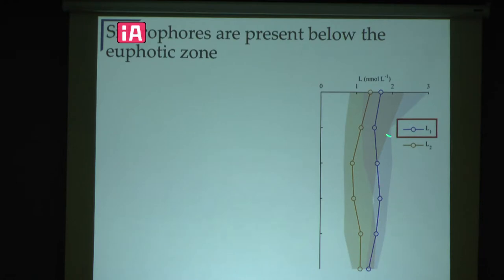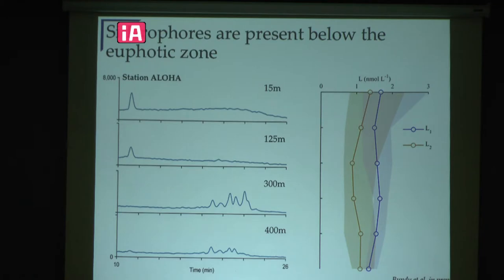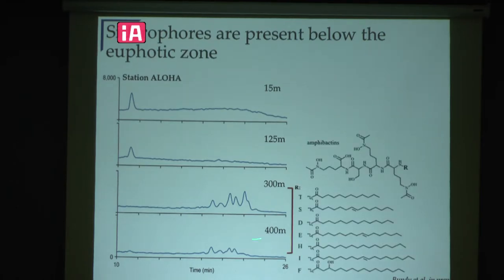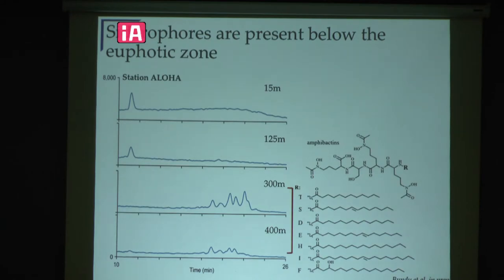Looking at depth profiles — we have none to date though we see strong ligands throughout the water column — I pulled out a few depths from one profile at Station ALOHA. In the surface and deep chlorophyll maximum, there's one compound, and then below the euphotic zone at 300 and 400 meters there's a suite of siderophores present in much higher concentrations. In surface waters we've seen ferioxamine-type siderophores, while below the euphotic zone we tend to see amphibactin compounds with long side chains that can partition into the cell membrane.